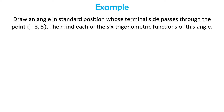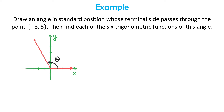Now let's solve the following example. Draw an angle in standard position whose terminal side passes through the point (−3, 5), then find each of the six trigonometric functions of this angle. We draw the rectangular coordinate system and plot the point (−3, 5): 3 units to the left and 5 units up. Then we draw the angle in standard position, giving us angle theta. From the given point we draw a perpendicular down to the x-axis. In quadrant 2, x is −3 and y is positive 5.